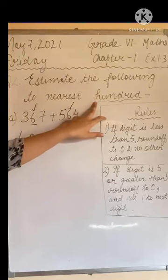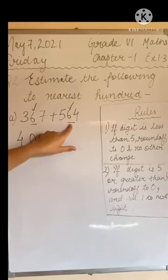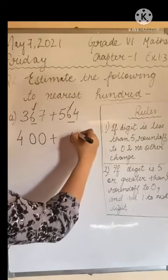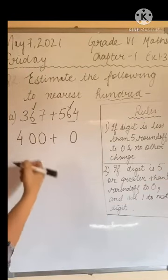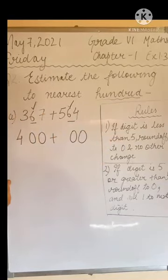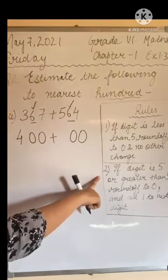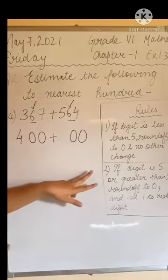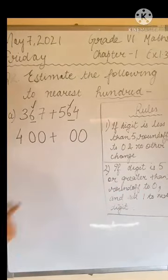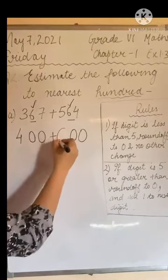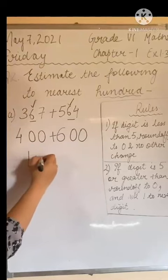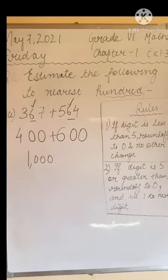For the second number, nearest hundred is given, so we round off the digit at the 10s position. 6 is present at the 10s position. First step: round off 6 to 0. Any digit after 6 also becomes 0. Since 6 is again greater than 5, rule number 2 applies — round off to 0, then add 1 to the next digit. The next digit is 5, so 5 plus 1 becomes 6. Therefore 400 plus 600 equals 1000.